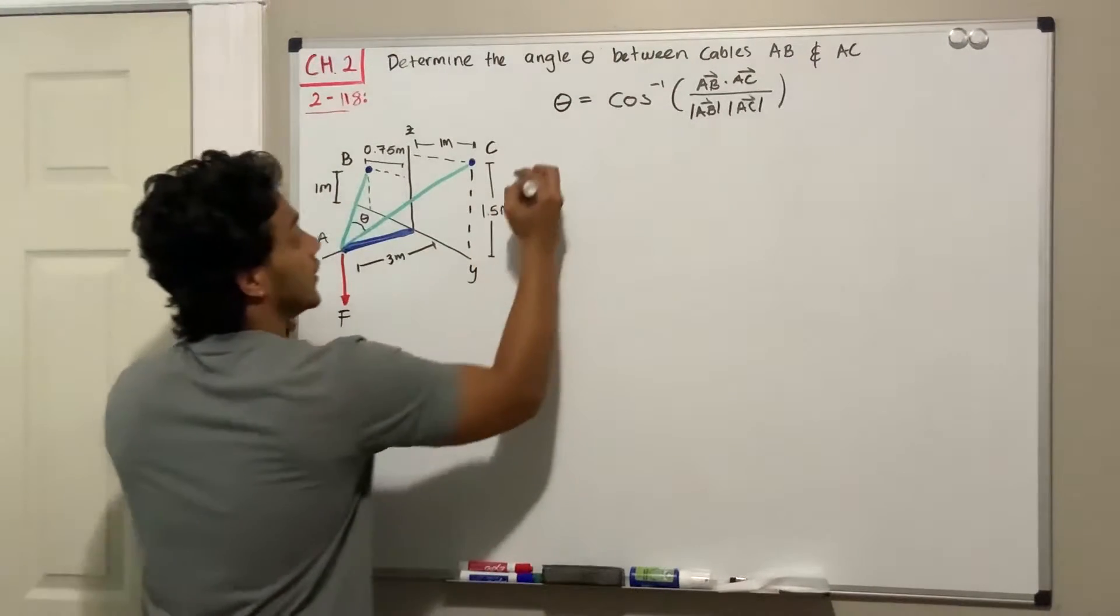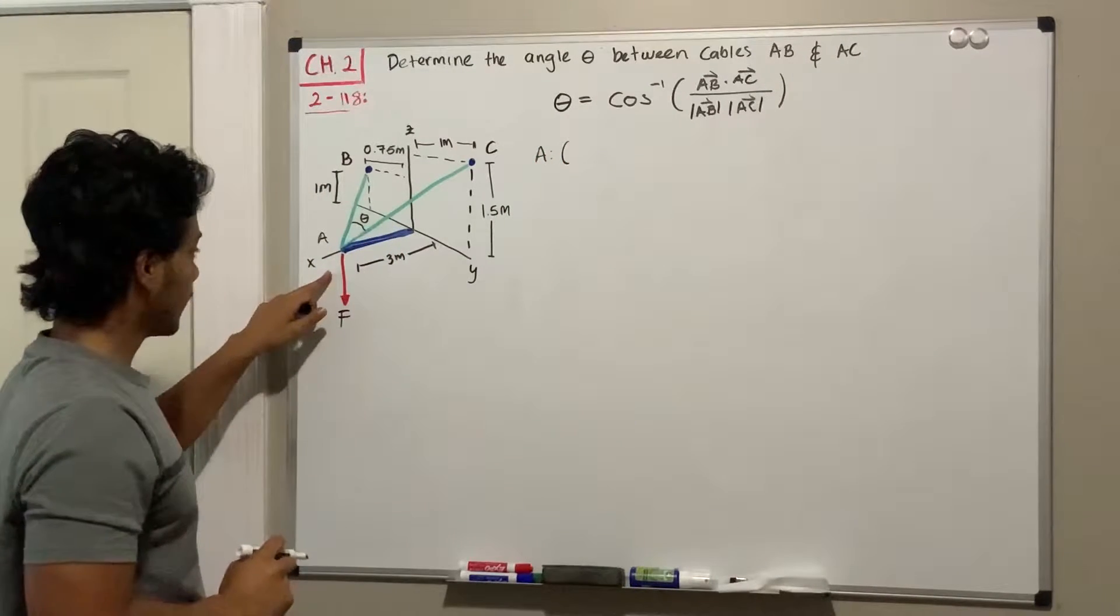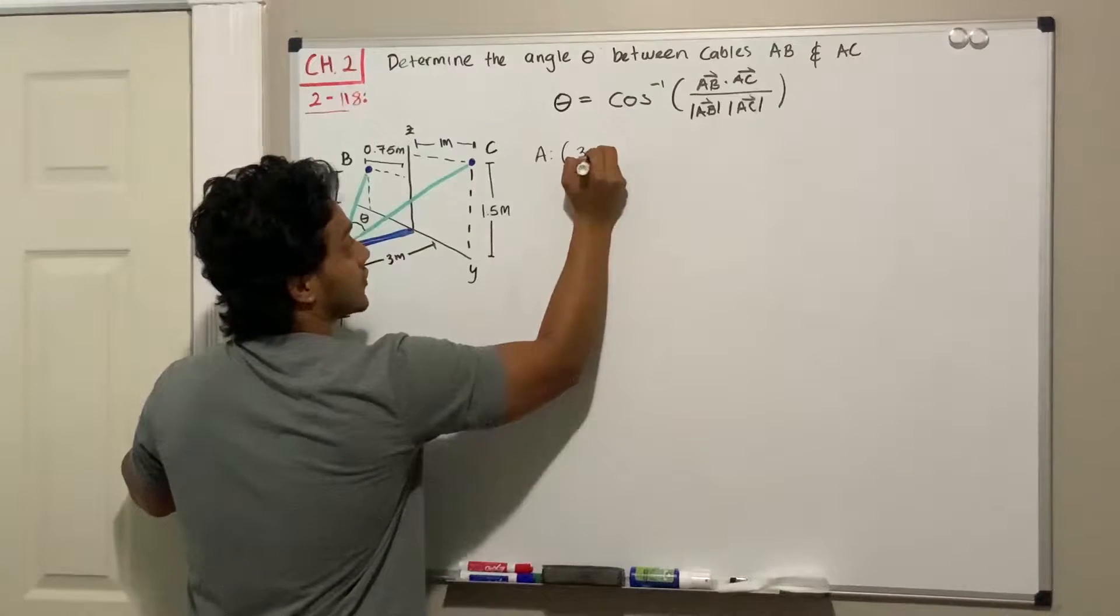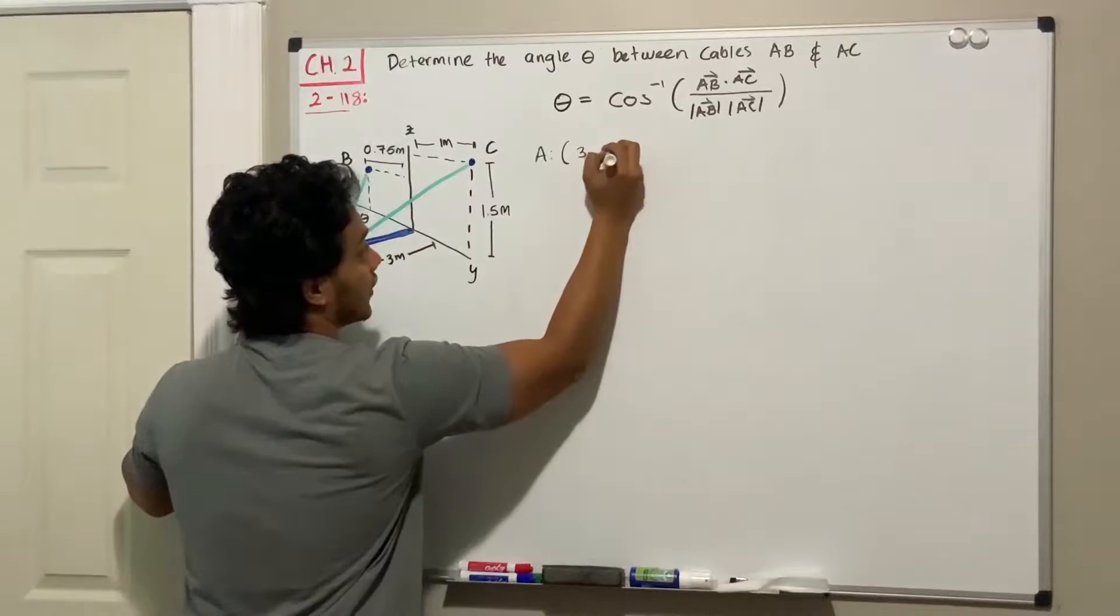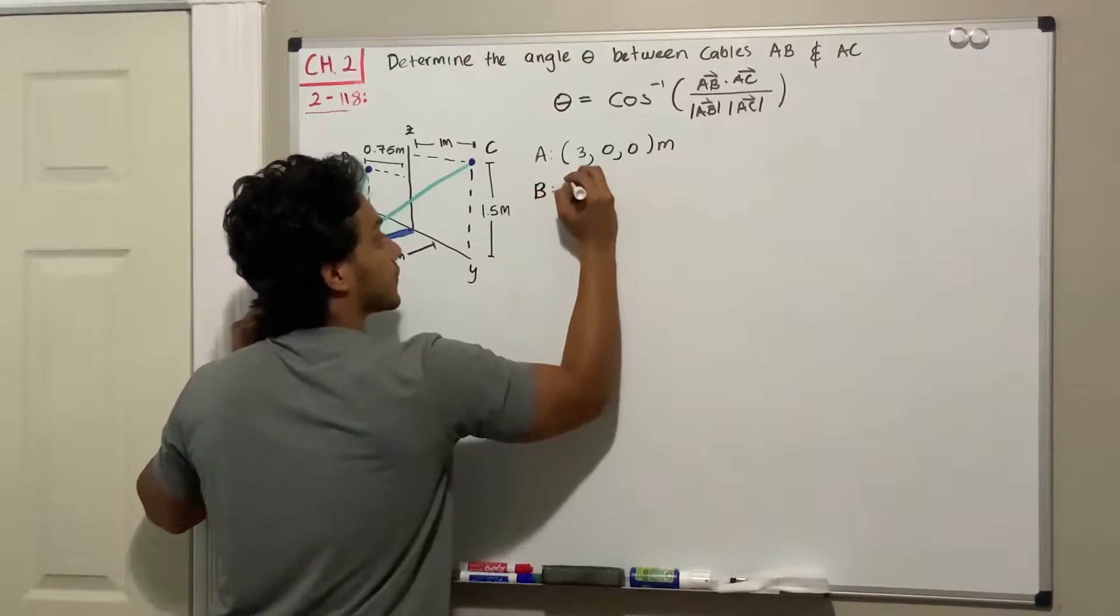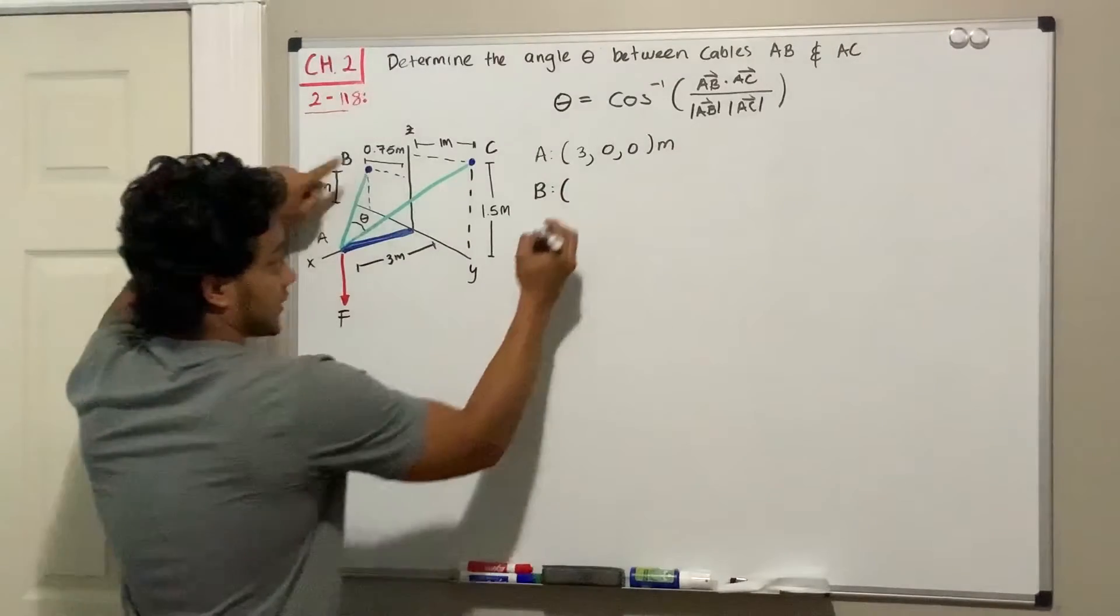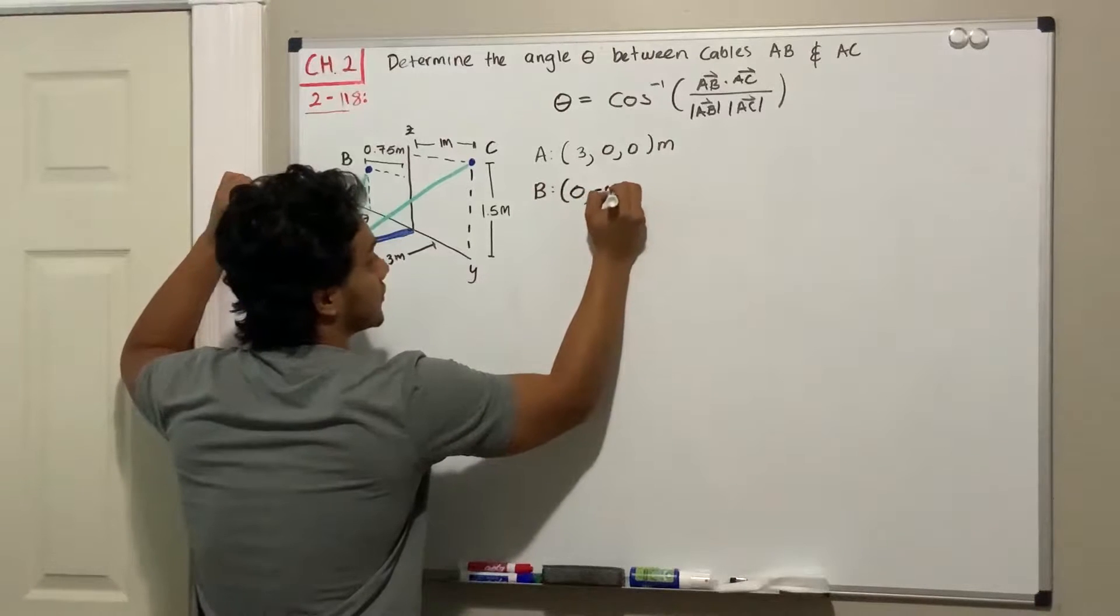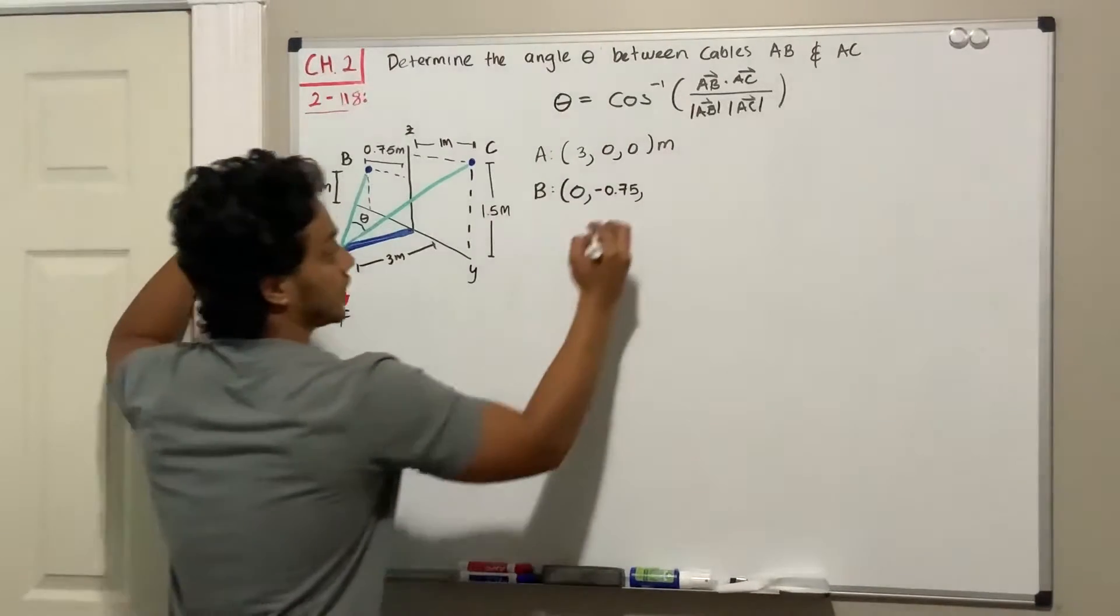where A and B are. So where is A located? Point A is located at exactly three meters on the x-axis, positive three meters. It has nothing in the y and nothing in the z, so we got zero and zero meters in both. For B, where's B located? It has nothing in the x-axis. In the y-axis, it has negative 0.75, and in the z-axis, it has one meter.